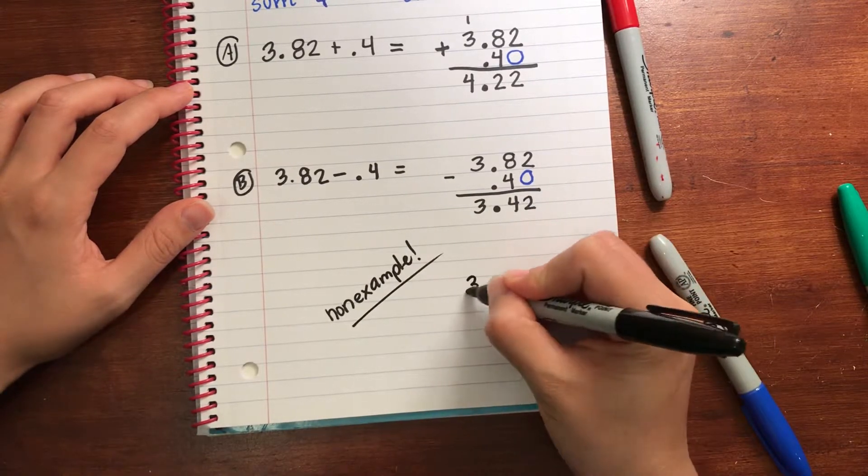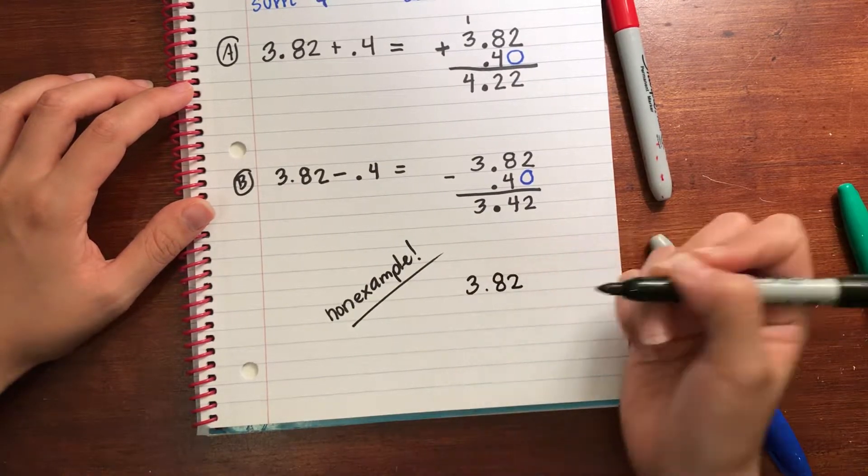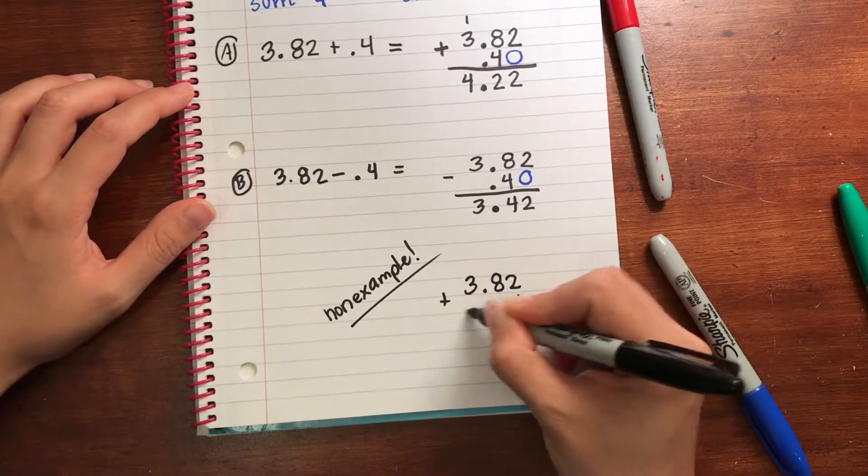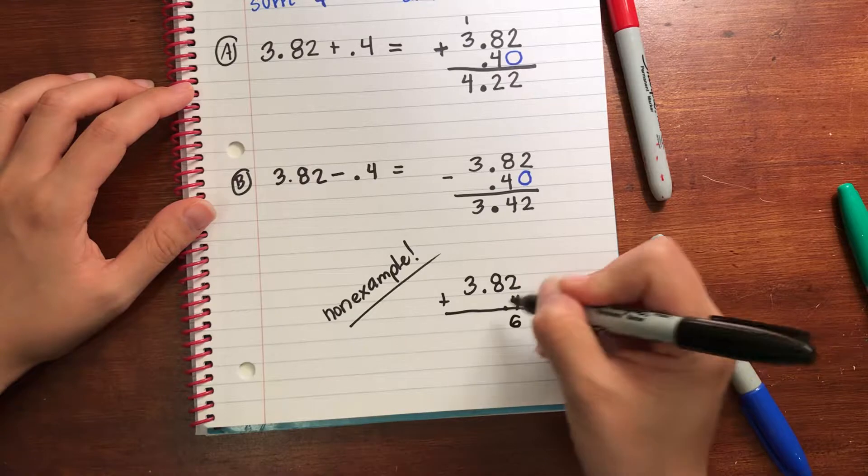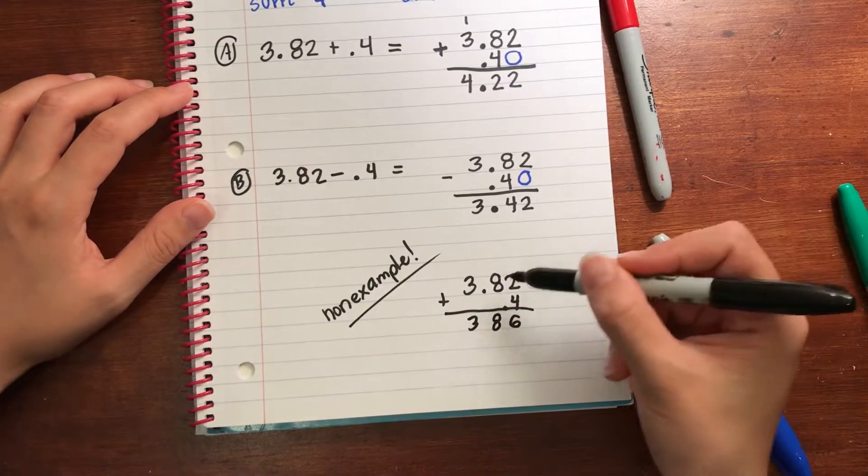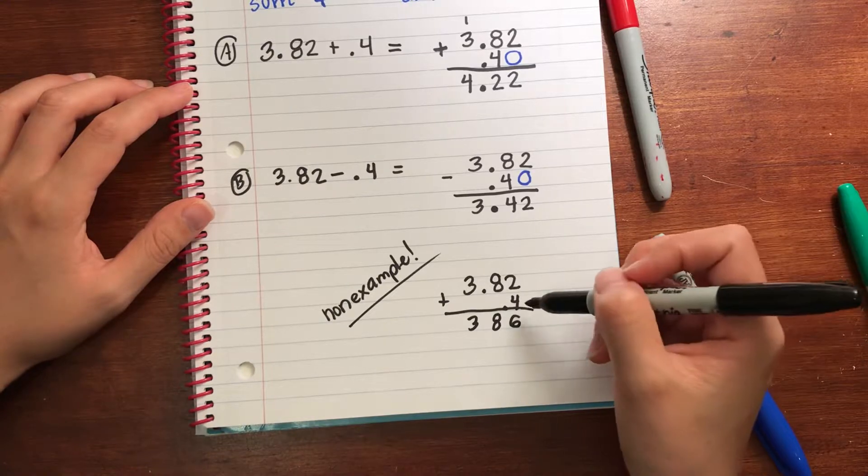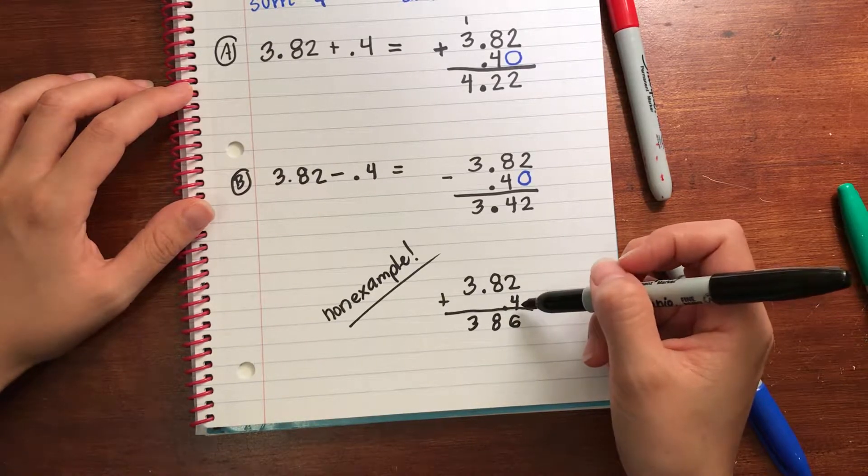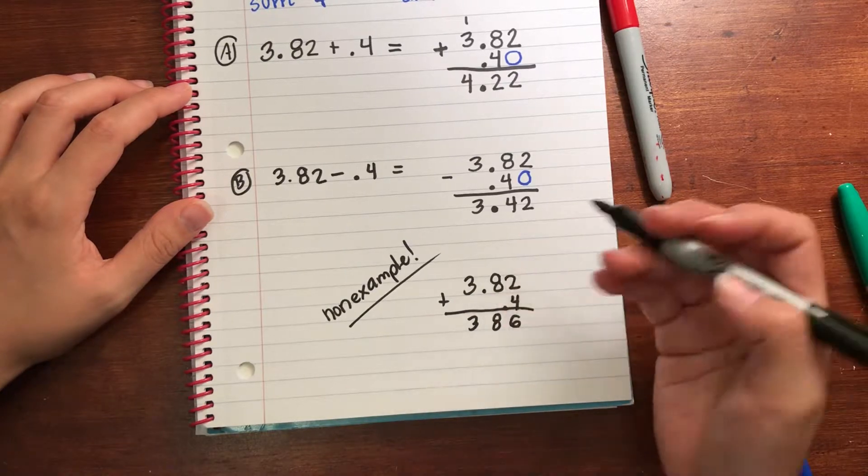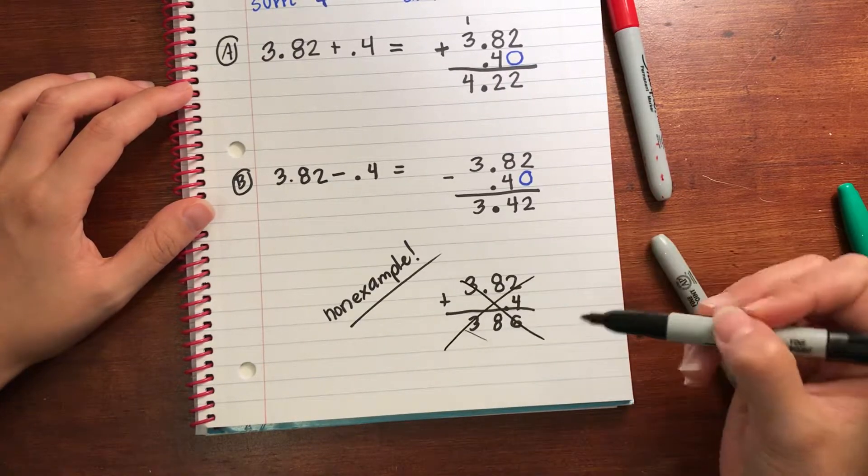So if I had 3.82 and I did not line up the decimal, I just added it to four tenths, I lined up the digits. First of all, I have no idea where to put the decimal because one's over here, one's over here. I'm adding a hundredth to a tenth so I get 386. Where do I put my decimal? My numbers are all wrong. This is a non-example.